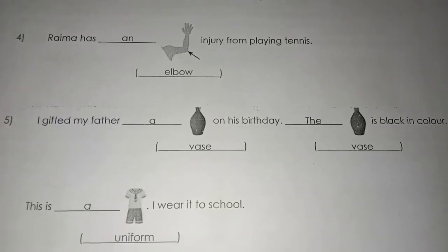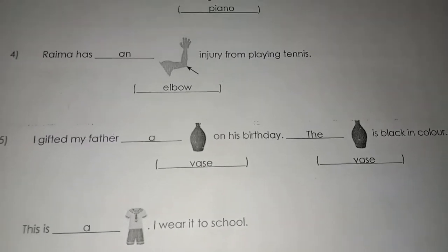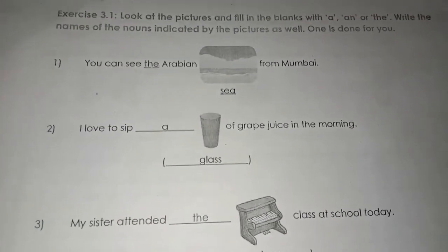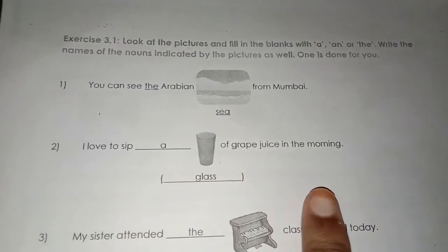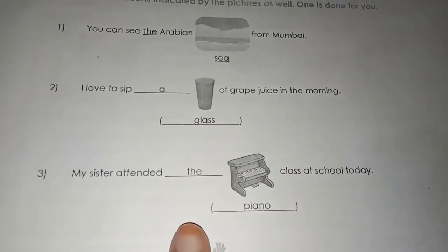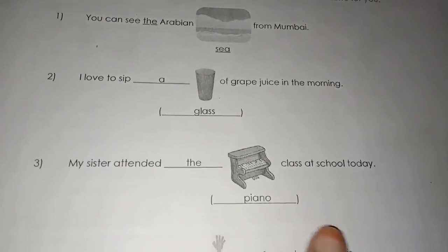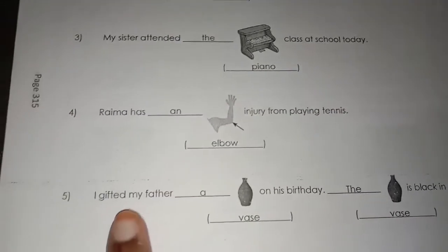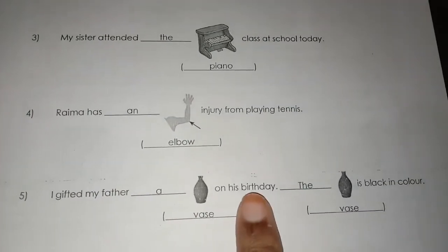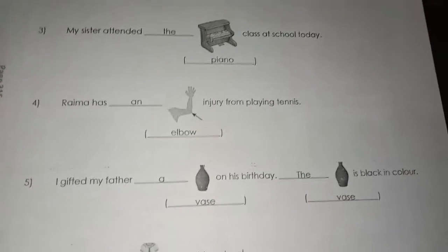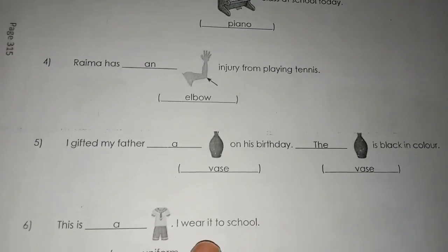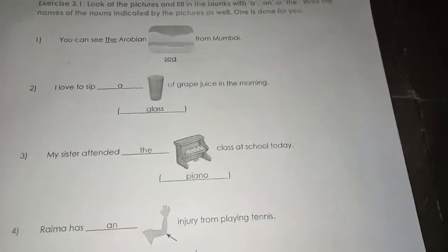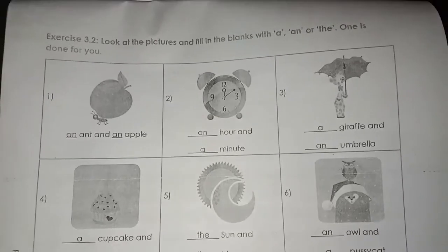Once again, Exercise 3.1: You can see the Arabian Sea from Mumbai. I love to sip a glass of grape juice in the morning. My sister attended the piano classes at school today. Rima has an elbow injury from playing tennis. I gifted my father a vase on his birthday. The vase is black in color. This is a uniform — I wear it to school. Understood, children? That is about your Exercise 3.1.